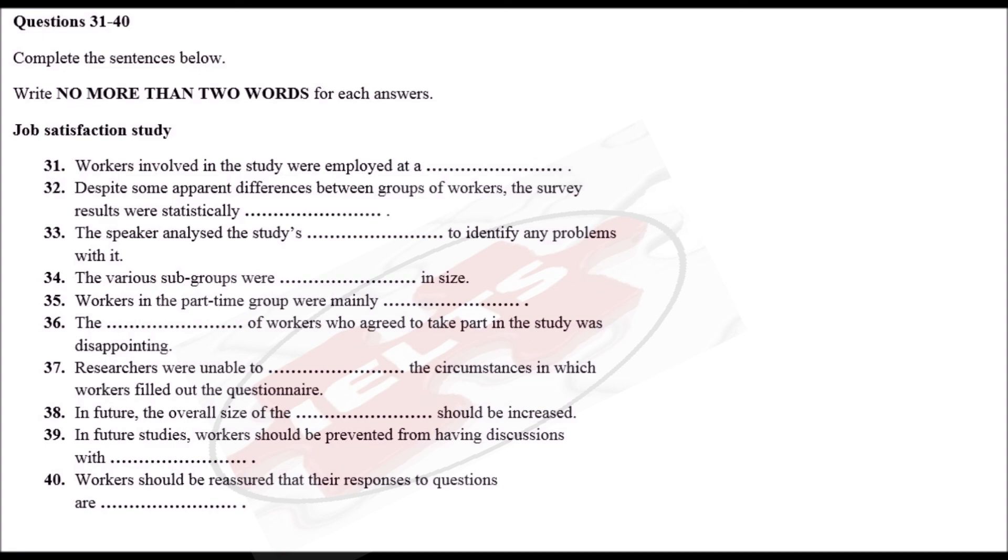This is what I found. First of all, the size of the sample was probably too small. The overall total of workers who took part in the survey was 223, which sounds quite a lot, but they had to be divided up into subgroups. Also, the numbers in the different subgroups were unequal. For example, there were 154 workers in the full-time group, but only 69 in the part-time group. And amongst this part-time group, only 10 were male, compared to 59 who were female.